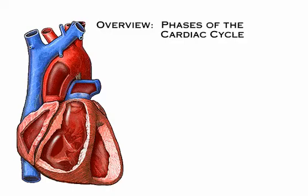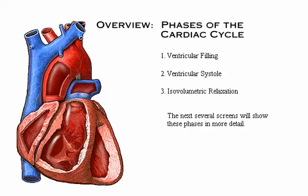The three phases of the cardiac cycle are ventricular filling, which occurs during mid to late diastole; ventricular systole, which includes isovolumetric contraction and ventricular ejection; and isovolumetric relaxation, which occurs during early diastole.